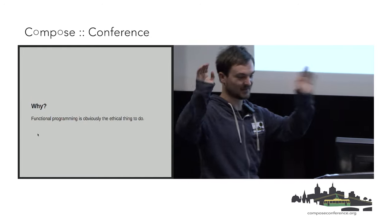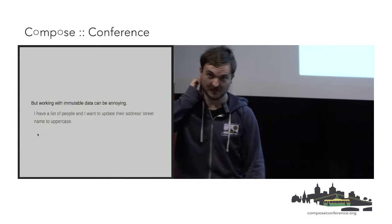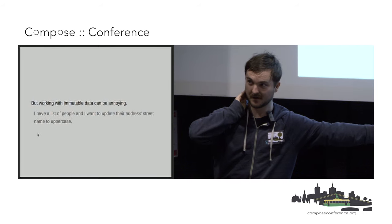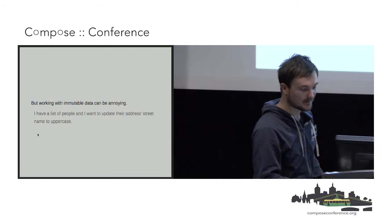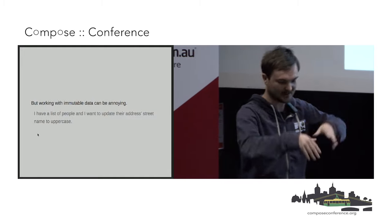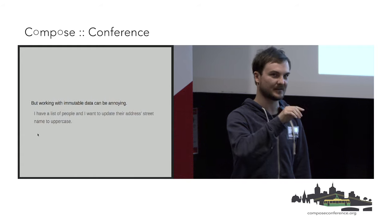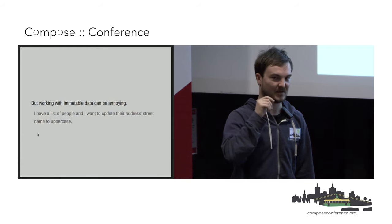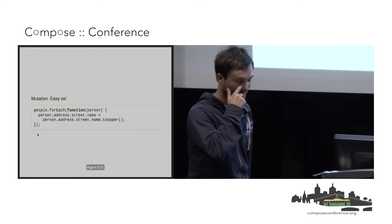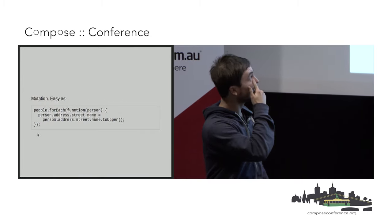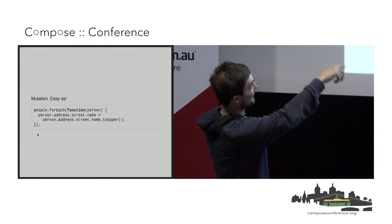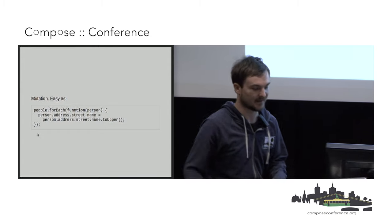We're doing functional programming because it's the right thing to do. Does anybody agree that working with immutable data can sometimes be annoying? Your manager comes up to you and says: I've got that page that lists all those people — I want their street names to be in uppercase. If we were to do JavaScript, this is easy. There's a little bit of code duplication between person, street, name — that's annoying — but this is easy to write.